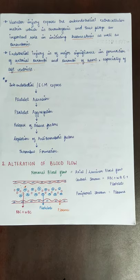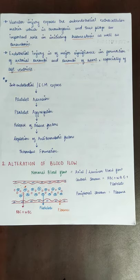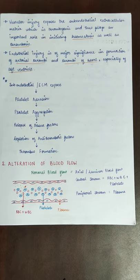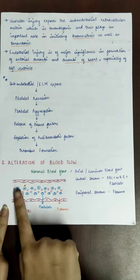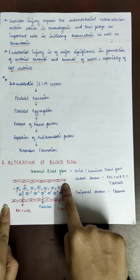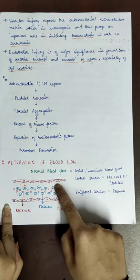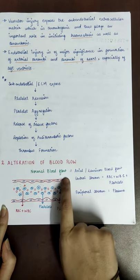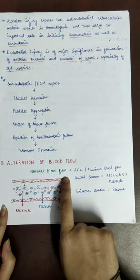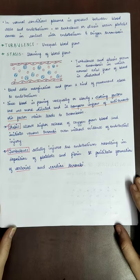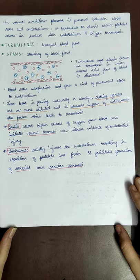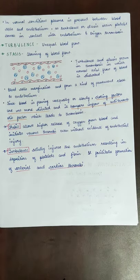The second cause is alteration of blood flow. Normal blood flow is axial or laminar — there is a central stream of blood cells (RBC, WBC, and platelets) and a peripheral stream of plasma. Because plasma is peripherally present, blood cells do not come into contact with the endothelium, and therefore thrombosis is not initiated. In normal conditions, plasma acts as a buffer between blood cells and the endothelium.